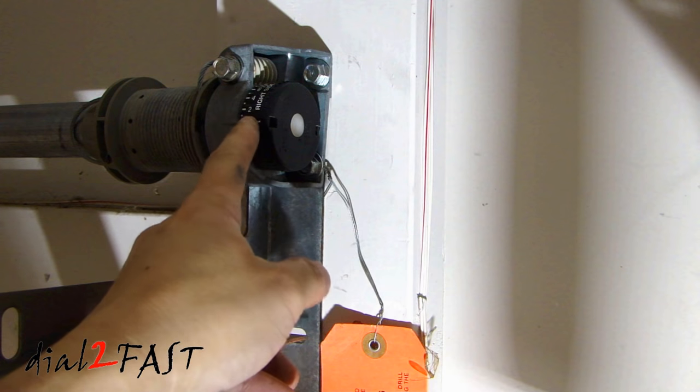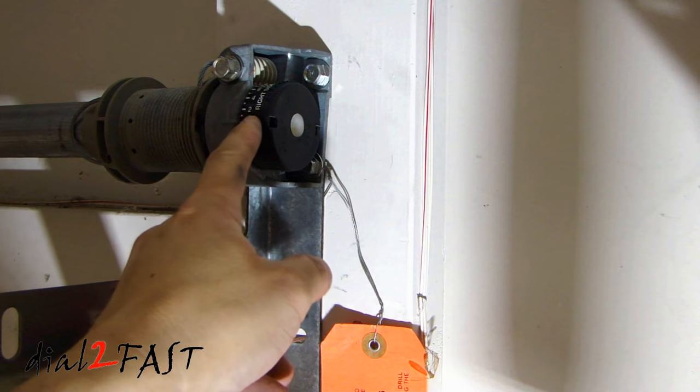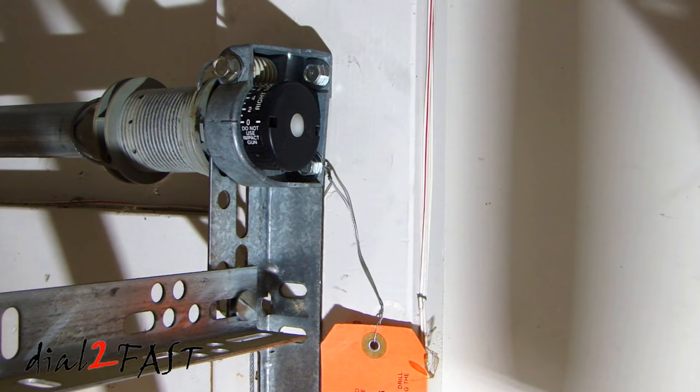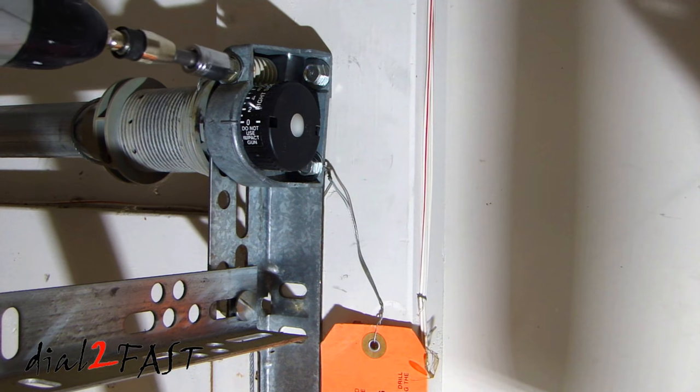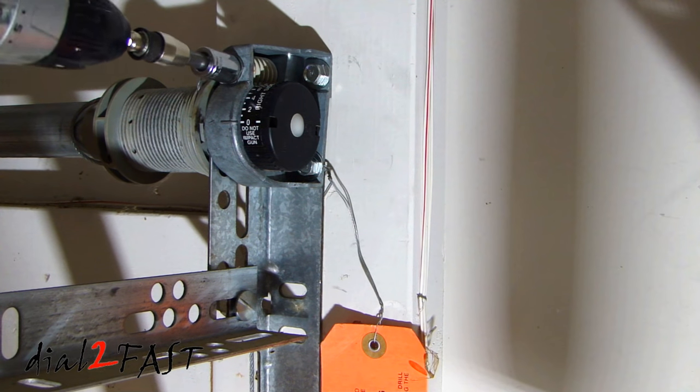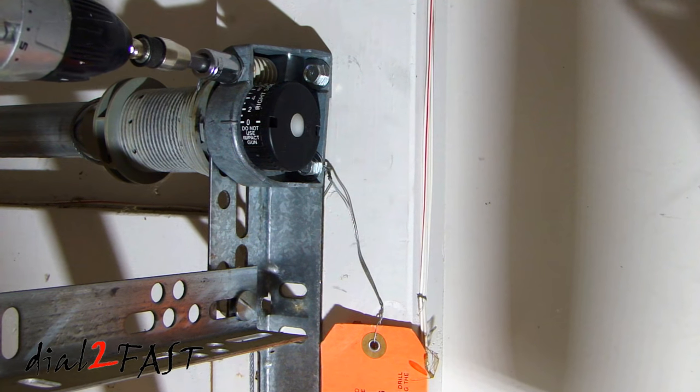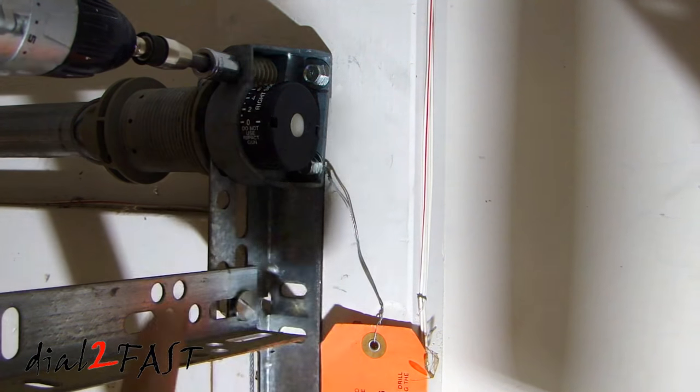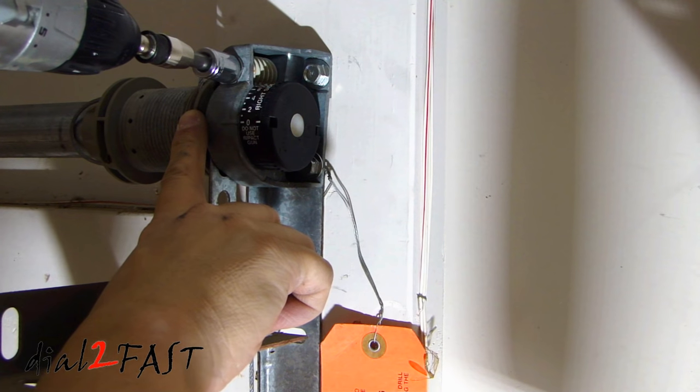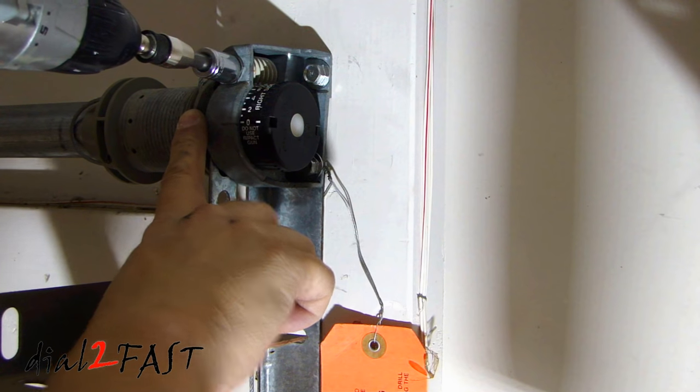Now the number on this dial corresponds to the number of turns. So go ahead and use your driver. Again you cannot use an impact gun because the gears are plastic. So you don't want to damage the gears. So we will go ahead and start turning this clockwise. And while you are doing this you want to pay attention to the cable on the drum. Make sure the cable sits in the groove properly on both left and right side.